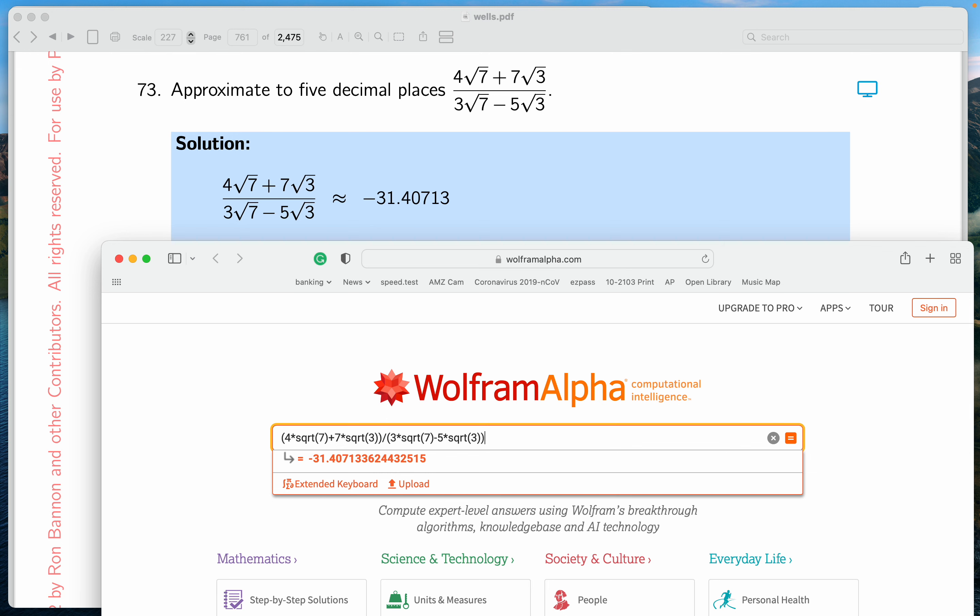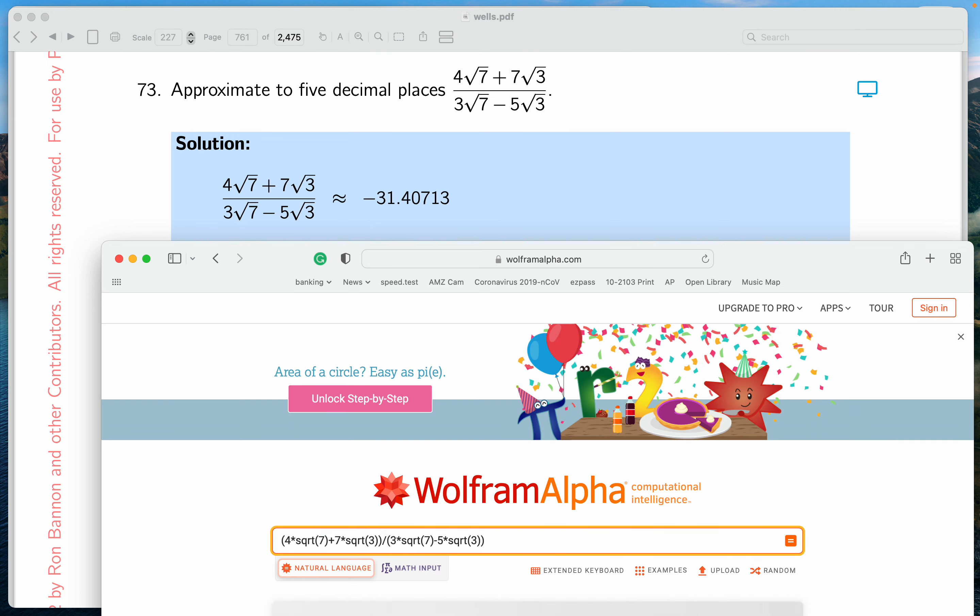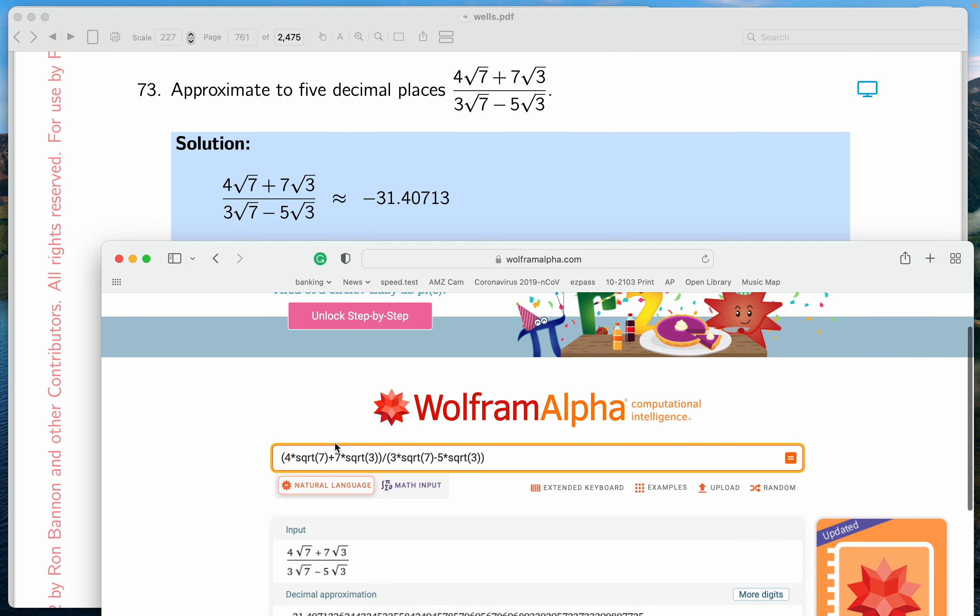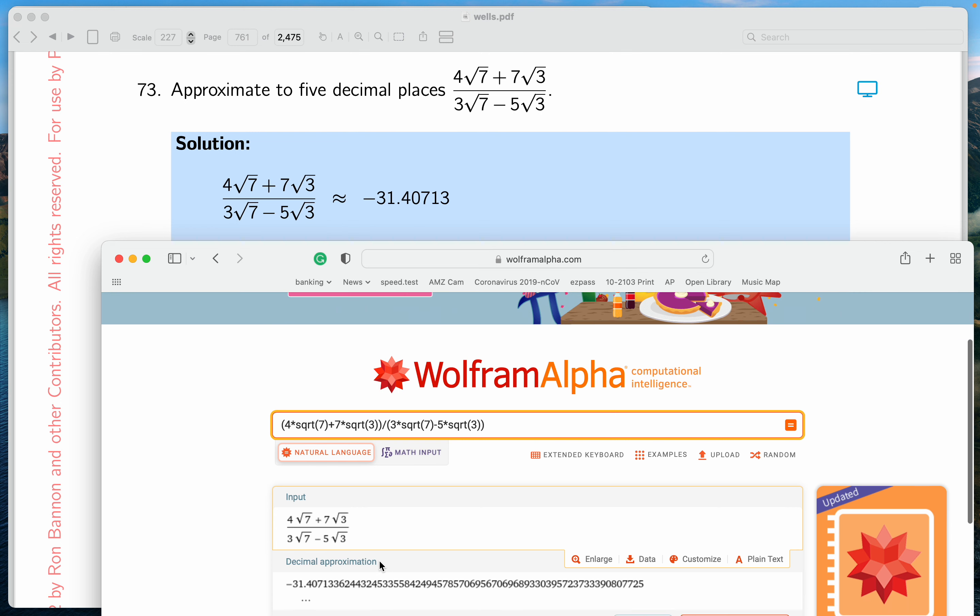Now I'm going to hit return, and I want to just go through what they're going to return to me. For one thing, they're going to typeset it for me, which I like, because then I can look at this, look at my original problem, and see they're the same problem. 4 root 7 plus 7 root 3 divided by 3 root 7 minus 5 root 3. What else do they do?